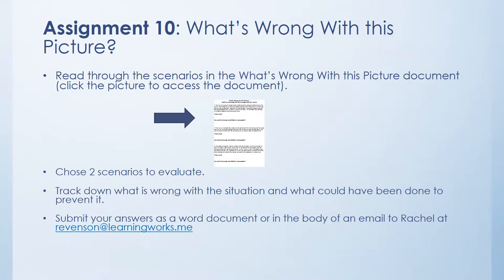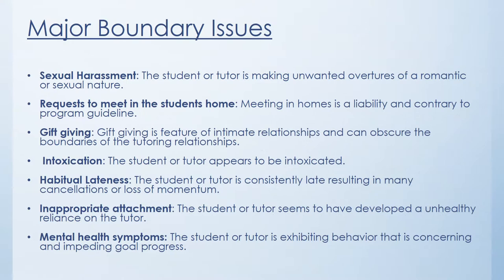In assignment 10, you will look at a series of scenarios. Choose two to evaluate. Track down what's wrong in the situation that you're evaluating and what could have been done to prevent it. As usual, submit your answers to Rachel in the body of an email or in a Word document as an attachment. To access the document, just click the picture.